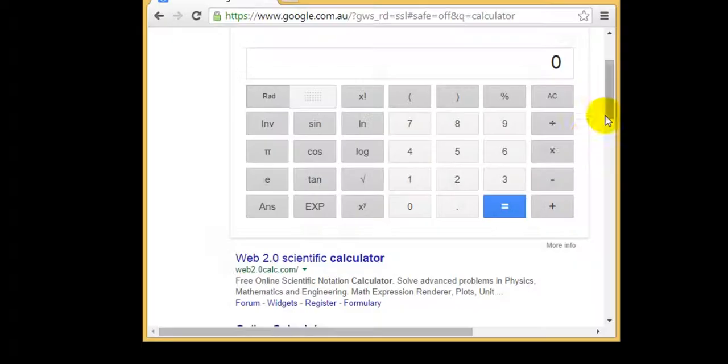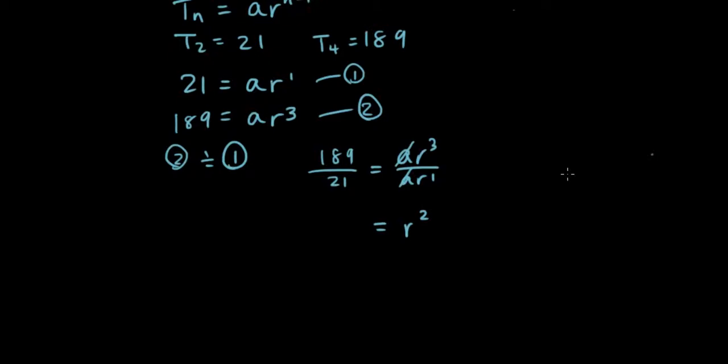189 divided by 21 is 9. So the left-hand side is 9. 9 equals R squared, so therefore R is equal to 3.